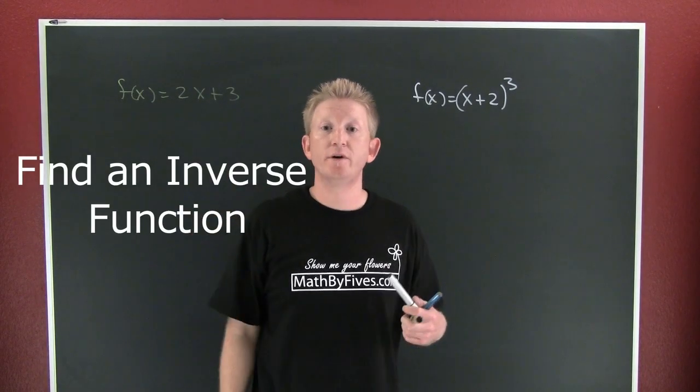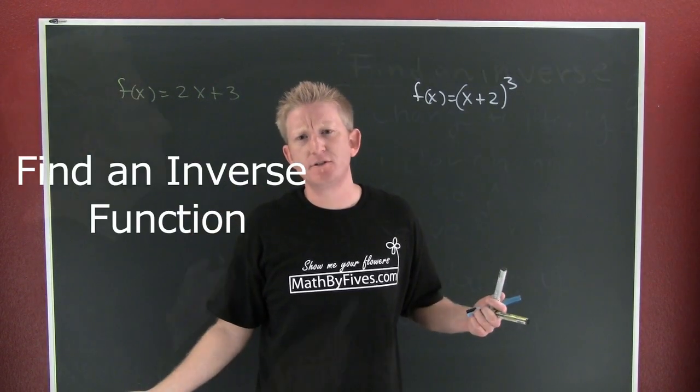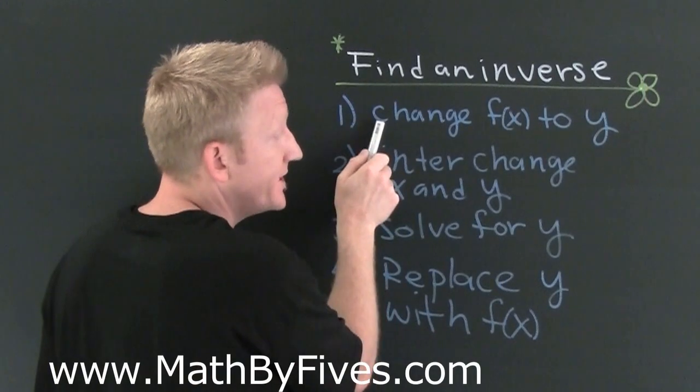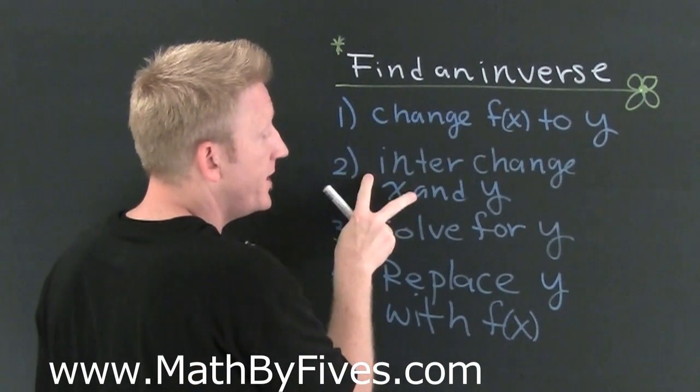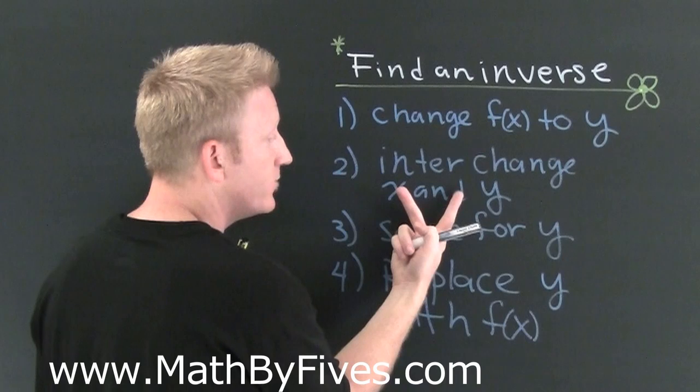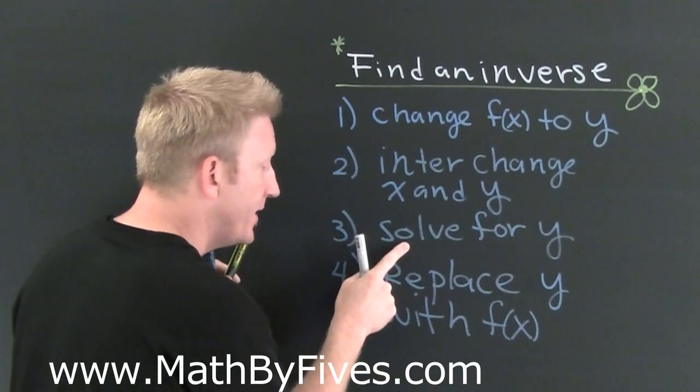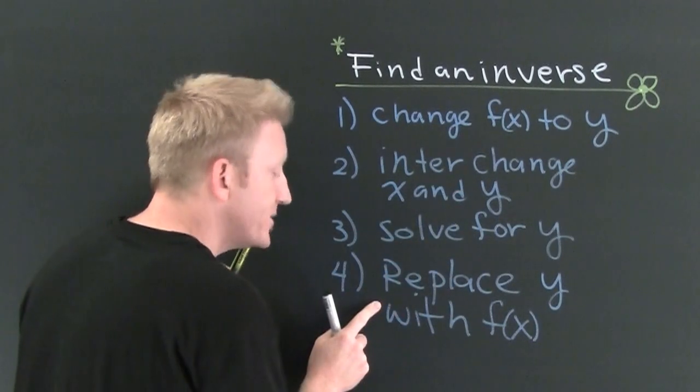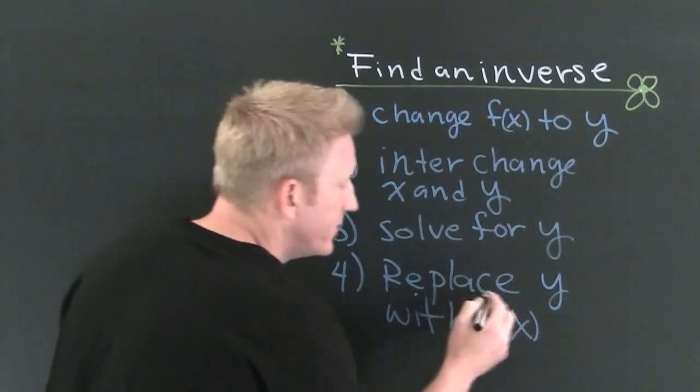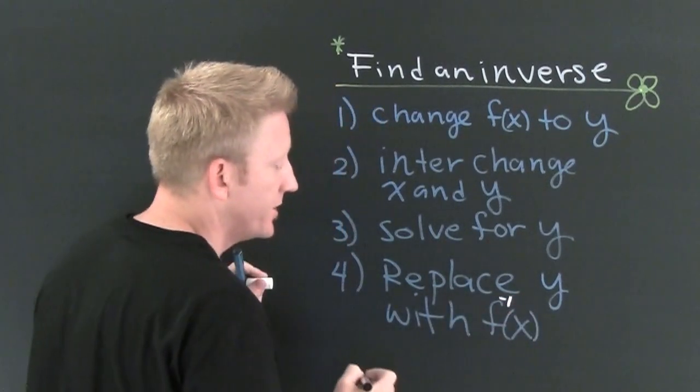Let's find an inverse of a one-to-one function. How do we find an inverse? To find an inverse, you're first going to change f of x to y. Then you're going to interchange x and y. Then you're going to solve for y. And fourth step, replace y with f inverse of x.